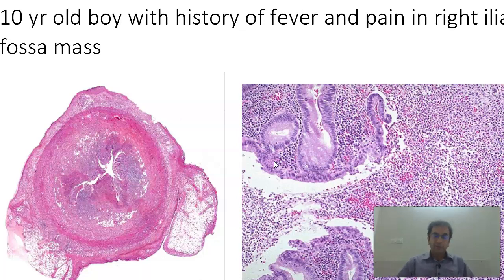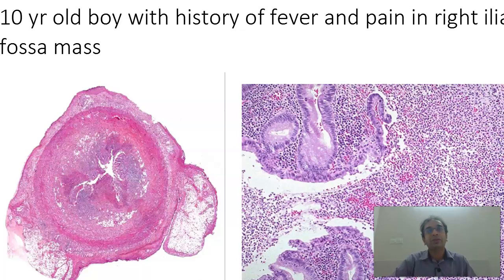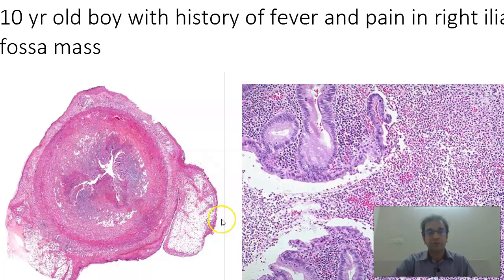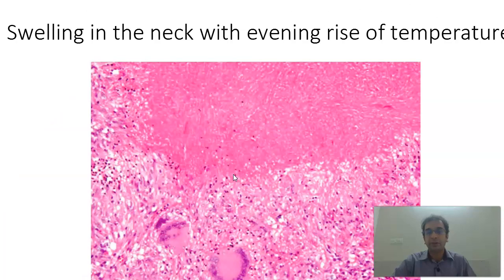The next slide is that of a 10-year-old boy with history of pain in the right iliac fossa mass. At the MBBS level, when you have a patient with a right iliac fossa mass, that hint itself will tell you this is an appendix. The diagnostic feature is that there should be inflammatory cell infiltrate of neutrophils infiltrating the muscularis propria — that is when you diagnose acute appendicitis. In the microscopy, you find mucosal glands with a lot of blue cells, which are neutrophils.